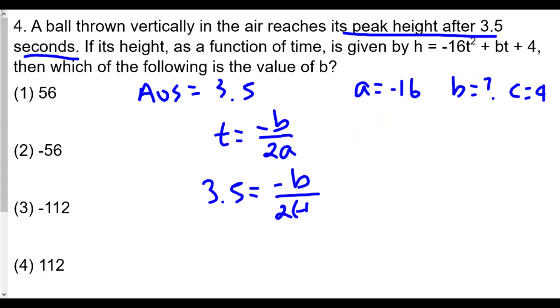Since a is -16, we have 2 times -16, which gives the equation 3.5 = -b/(-32). The negatives divide out, so this becomes 3.5 = b/32. Therefore b equals 32 times 3.5. When we multiply 32 times 3.5, we get 112—positive 112. So the answer for number four is choice 4.